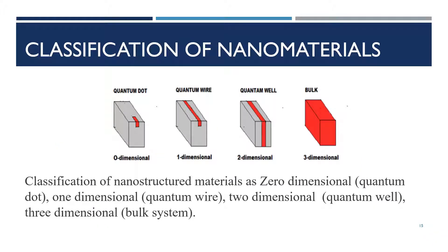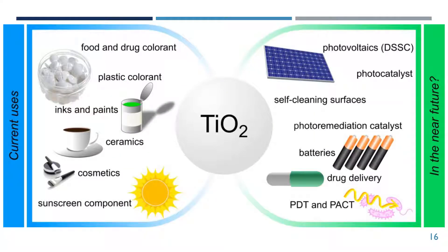Nanostructured materials are classified as: 0-dimensional (i.e., quantum dot), 1-dimensional (i.e., quantum wire), 2-dimensional (i.e., quantum well), and 3-dimensional (i.e., bulk system), as shown in the image here.